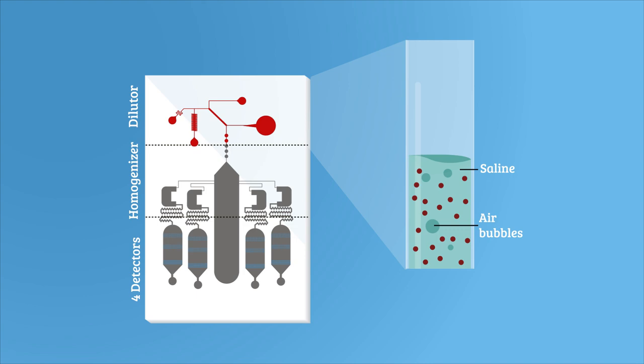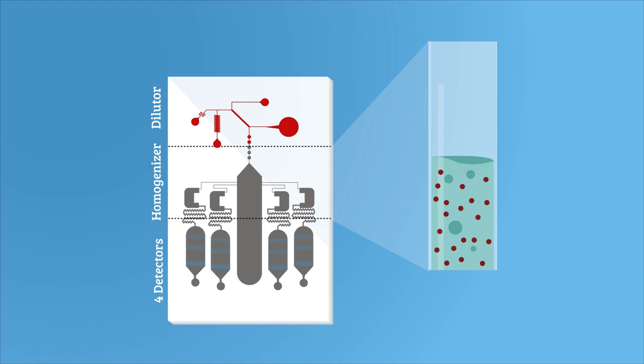Then, this blood-saline solution flows into the homogenizer, which facilitates further mixing, yielding a uniform solution.